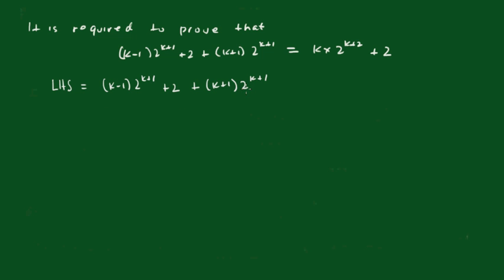Now I've written down what the left hand side is. Let's see if we can get this to equal the right hand side. You'll notice the 2 on the end, so I'll push this around a little bit. I'll write this as (k minus 1) times 2 to the k plus 1, plus (k plus 1) times 2 to the k plus 1, plus 2.